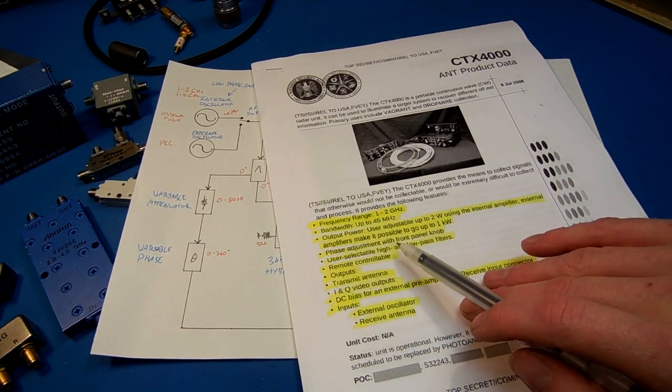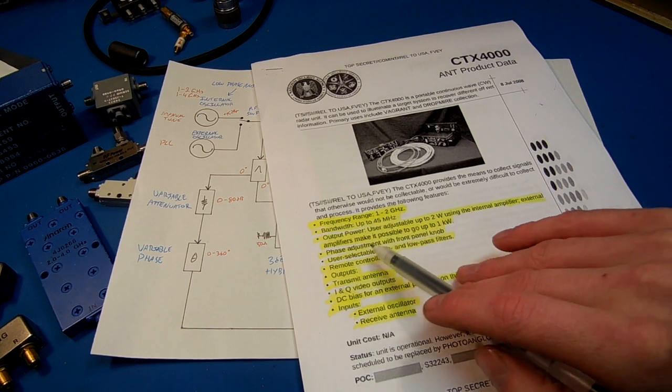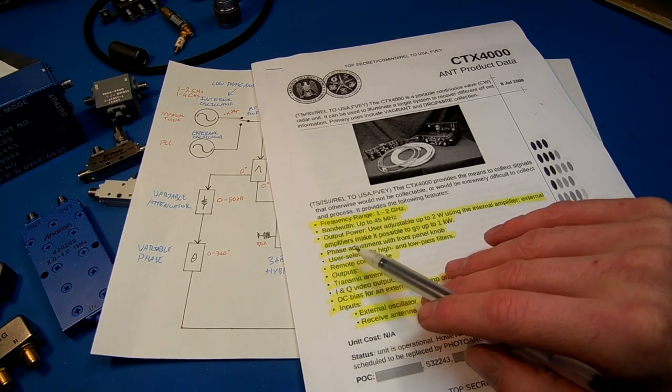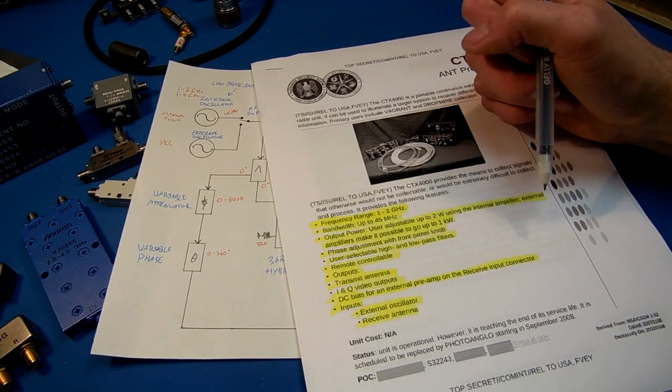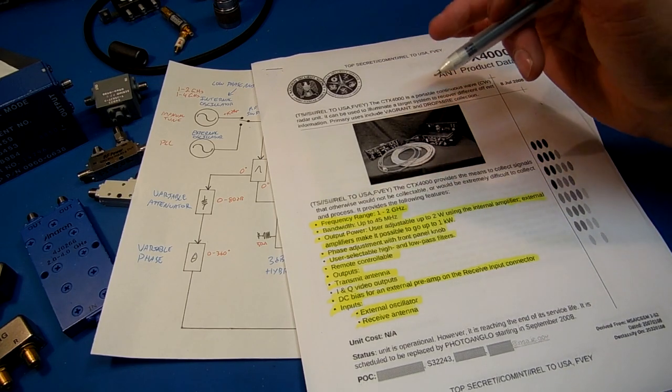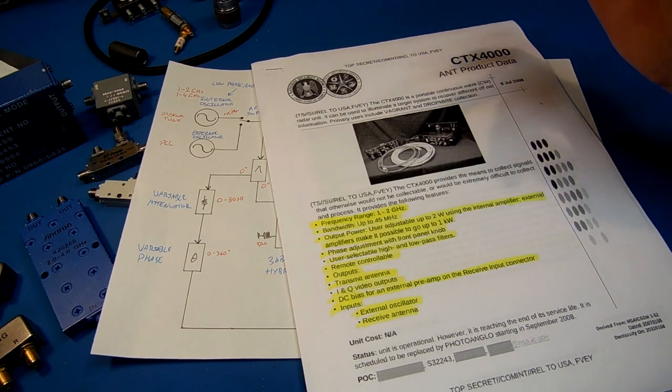The phase adjustment with the front panel knob, this is most likely for an active canceler type circuit. What that does is on the received signal, there tends to be a lot of noise and a large static signal. Like if you're targeting an office building,